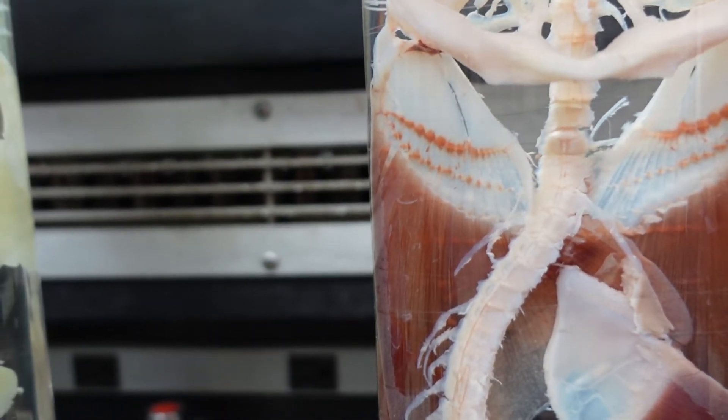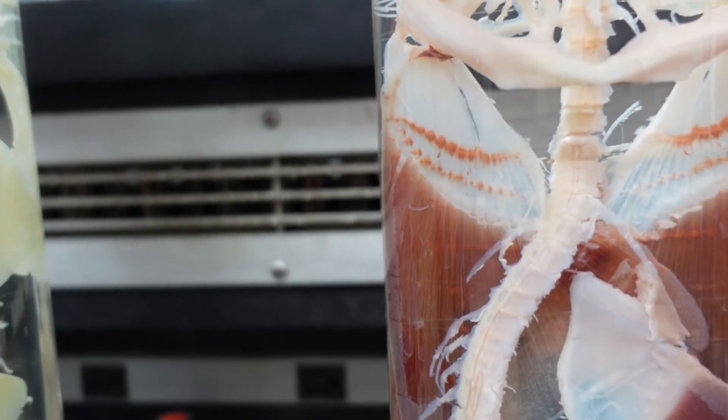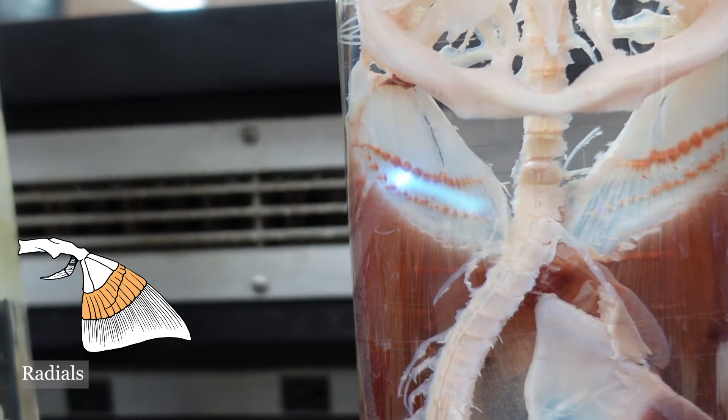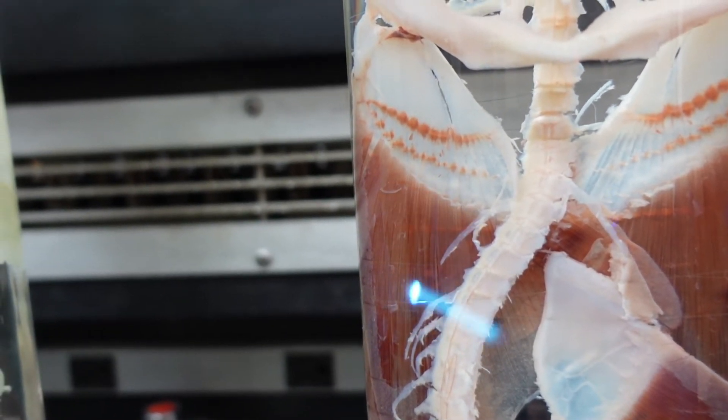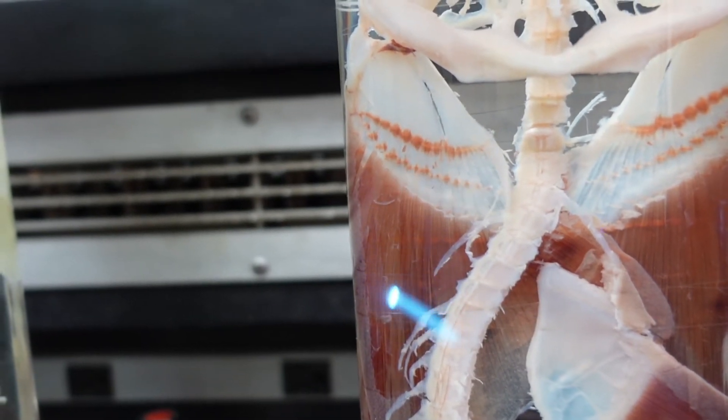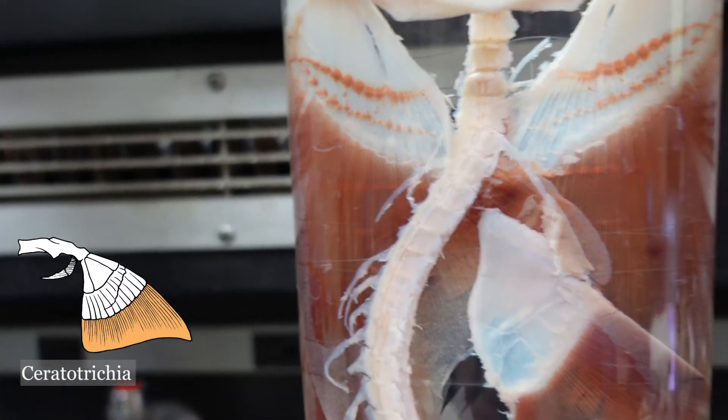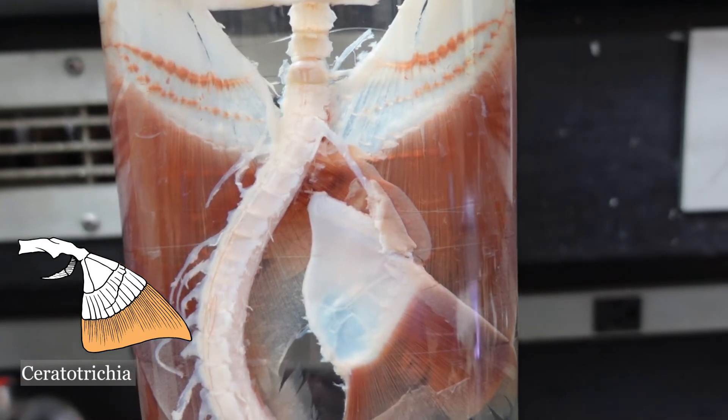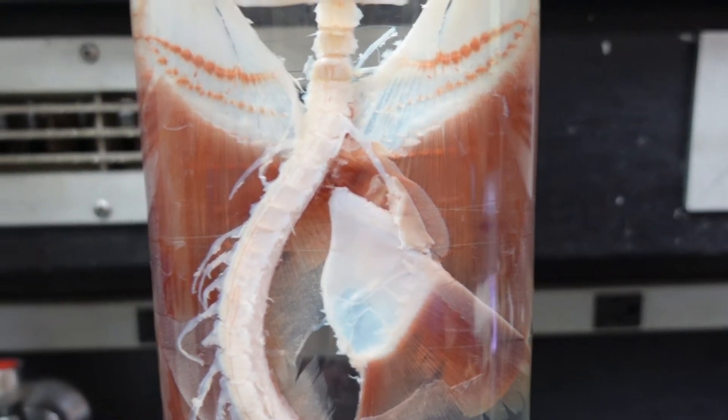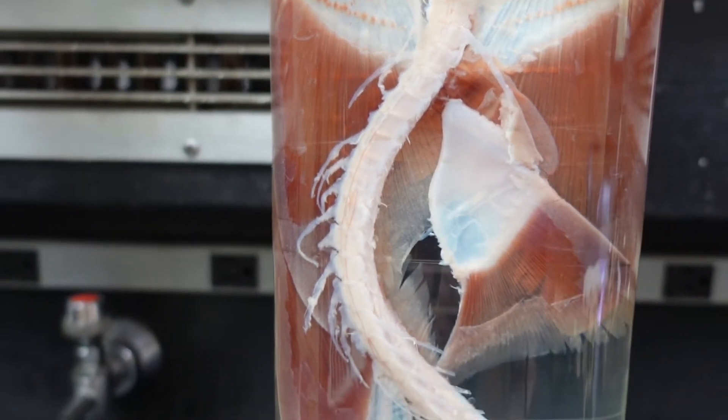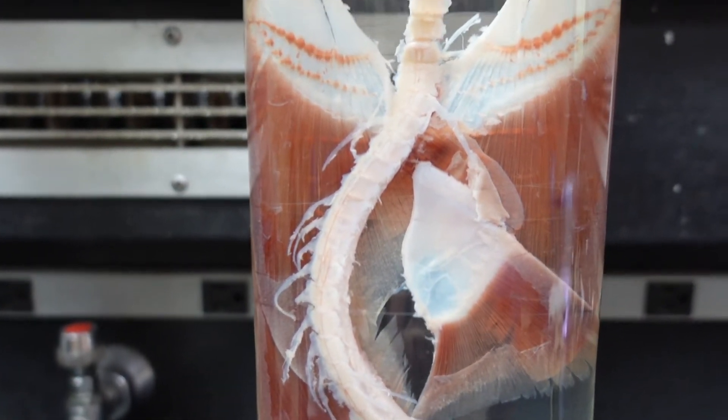There are several of these smaller cartilages called radials, and then these red long rays are the ceratotrichia or keratotrichia. We don't have a consensus on how to pronounce that, but as long as it's spelled right, it makes no difference.